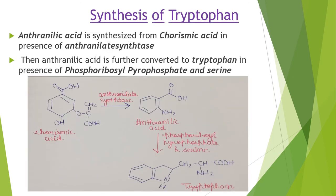Now we see the synthesis of tryptophan. Anthranilic acid is synthesized from chorismate in the presence of anthranilate synthase. Then anthranilic acid is further converted to tryptophan in the presence of phosphoribosyl pyrophosphate (PRPP) and serine.